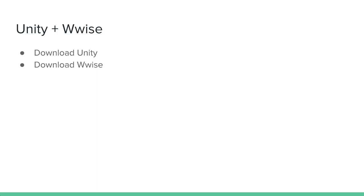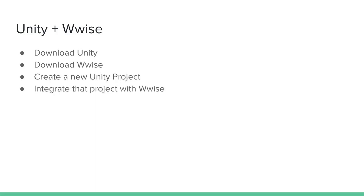We're going to be downloading Unity and then downloading WISE, and then we're going to create a new Unity project. After that, we're going to integrate that project with WISE and then test both the Unity project and the WISE project to make sure that our integration is working.